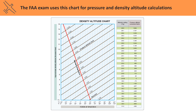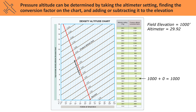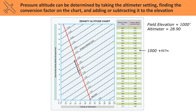On the test, a chart like this one will be used to determine pressure altitude and density altitude. Pressure altitude is found by taking the altimeter setting, finding the conversion factor, and adding it to the field elevation. So if the altimeter is 29.92, the conversion factor is zero — add that to a field elevation of say 1,000 feet and pressure altitude also equals 1,000 feet. If you have an altimeter setting of 28.90, the conversion factor is 957, and adding it to the field elevation gives a pressure altitude of 1,957.